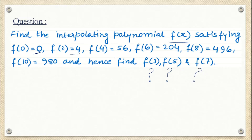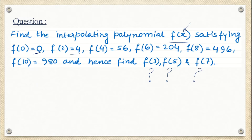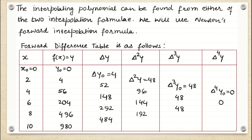To find the interpolating polynomial, we will find the polynomial with respect to variable x, and later put x = 3, 5, 7 in it to estimate f(3), f(5), and f(7). We are free to use Newton's forward interpolation method or Newton's backward interpolation method. Here we are following Newton's forward interpolation method.